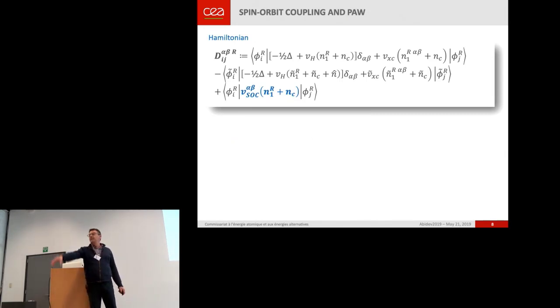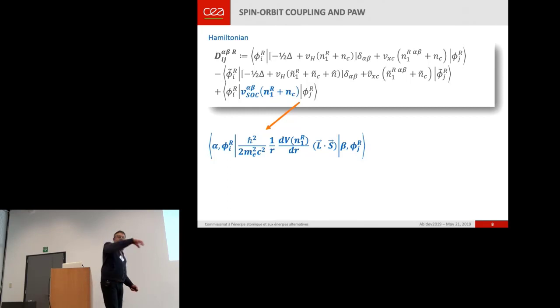So in PAW, you take the spin-orbit Hamiltonian between two basis elements. And this can be expressed like this. You have to handle the spinors and the partial wave basis. This is done in Abinit.